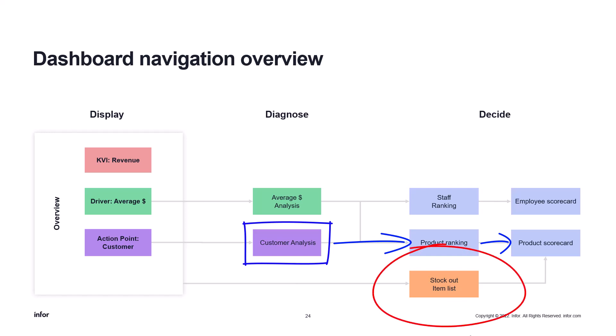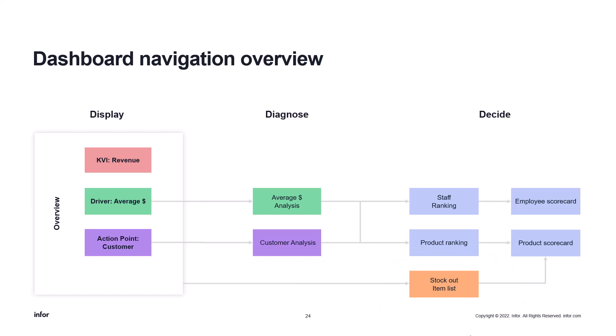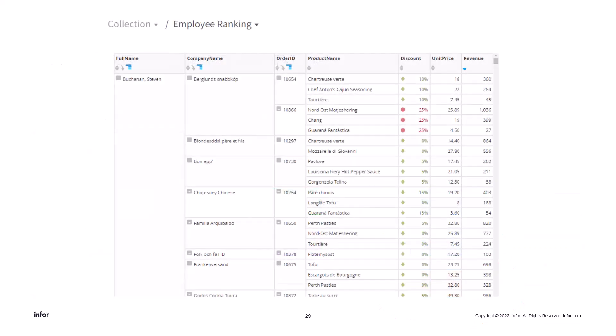Our last example is a decide page — which, as mentioned before, these are usually lists. We have a table report of how our staff is doing in terms of selling: what kind of discounts they are giving, unit prices, and the revenue they are generating, so we are able to rank them by their performance.